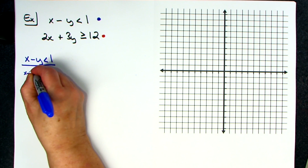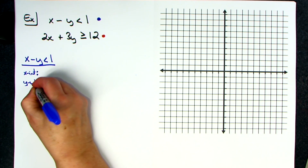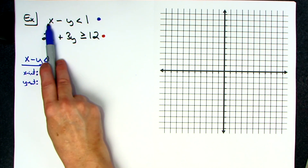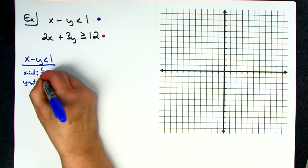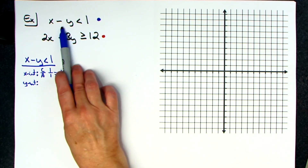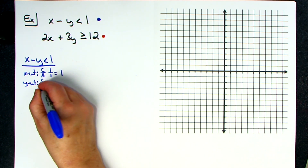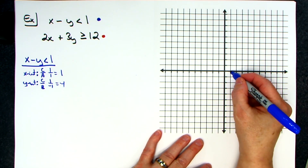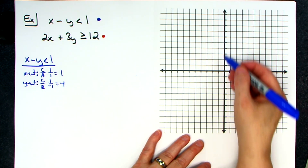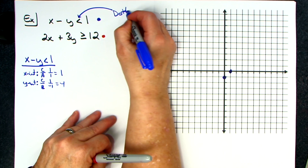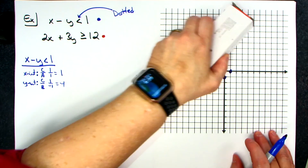My hope is that you can just find the x and y intercepts really quickly. Using c over a: one divided by one gives me an x-intercept of one. For the y-intercept using c over b: one over negative one gives me negative one. So I'm going to come to the x-axis and put a dot on one, then to the y-axis and put a dot on negative one. I check the symbol and I'm supposed to draw a dotted line.